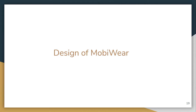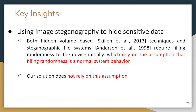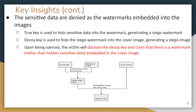Based on these assumptions, we propose MobiWear with two key insights. First, we use image steganography to hide sensitive data — unlike hidden volume-based techniques or steganographic file systems, which require filling randomness to the device initially, our solution does not rely on that assumption. Second, sensitive data are denied as watermarks embedded into images: the true key is used to hide sensitive data into a watermark generating a stego watermark, and then the decoy key hides the stego watermark into the cover image generating a stego image. Upon coercion, the victim discloses only the decoy key.